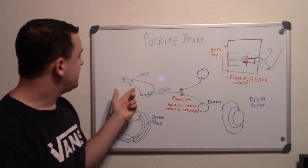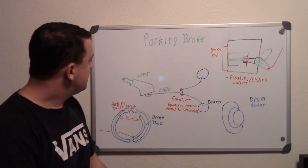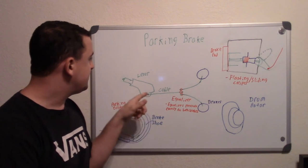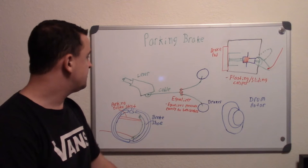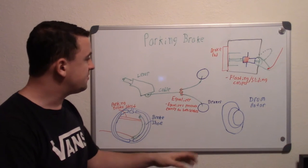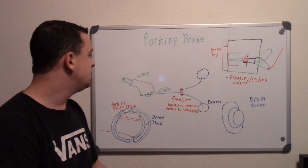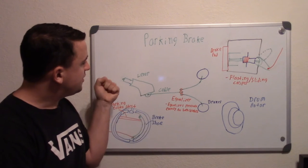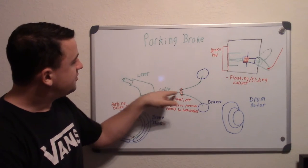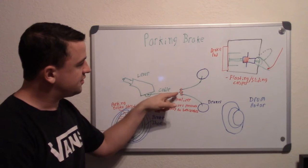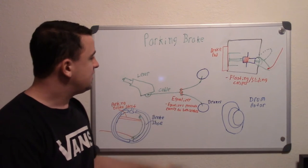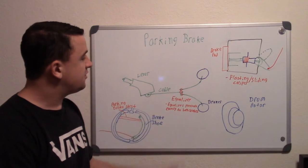Basically, you have your lever that you pull, usually down between the seats, or in some vehicles down by the brake and gas pedal. When you pull the lever, you're mechanically pulling a cable that goes towards the back of the vehicle and connects to this part called the equalizer.